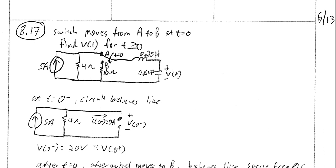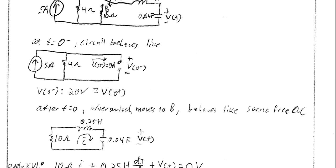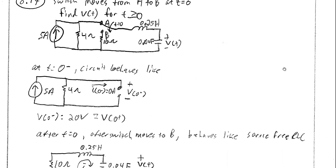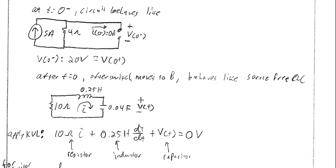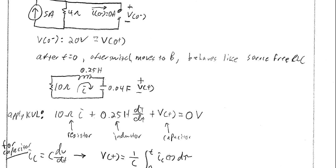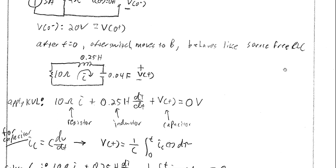After t equals 0, the switch moves down to B and this effectively becomes a source-free RLC circuit, which we can analyze accordingly. There are a couple of different ways to analyze a source-free RLC circuit. I'm going to showcase here that you can analyze it entirely in terms of current and just do a mesh analysis.